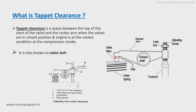There are certain conditions associated with tappet clearance. The conditions are that the valve should be in closed position and the engine should be at cold condition. The valve should be in closed position because when the valve is open, the spindle will be in the downward direction, so the actual tappet clearance cannot be measured.